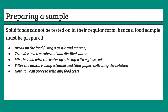Before we go into the actual food tests, we need to cover one of the most important things people often forget: preparing the food sample. Solid foods in their whole form cannot be tested on, as you won't observe any color change when using the chemicals on them. The preparation method is universal. The first step is to break up the food using a mortar and pestle.